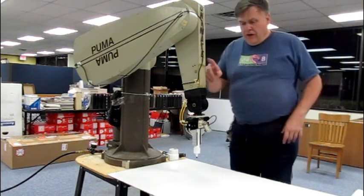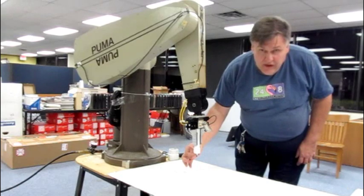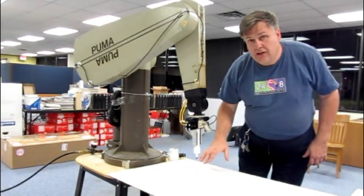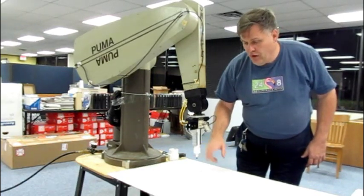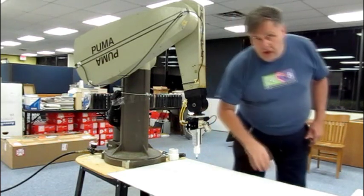So what we've got here is the Puma rigged up with a pen. The pen can float up and down because this table is not exactly flat. I've taken a DXF file and converted it to a series of movements. If it works, this should draw a square and then draw some stuff in it. We're going to give it a try.